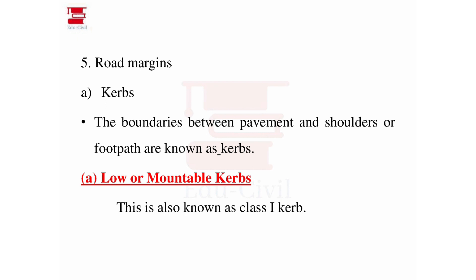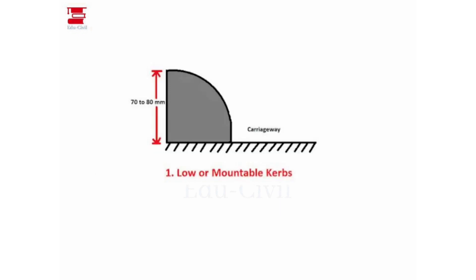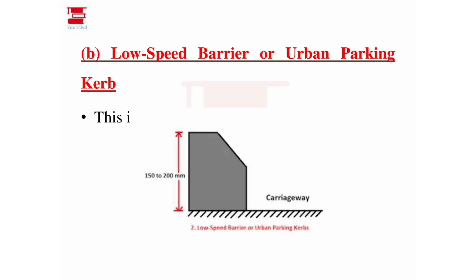Now, curb types. Class 1 is the low or mountable curb — this is a curb you can mount over. The height is very important: 70 to 80mm. Class 2 is the low-speed barrier urban parking curb. The height for Class 2 is 150 to 200mm.